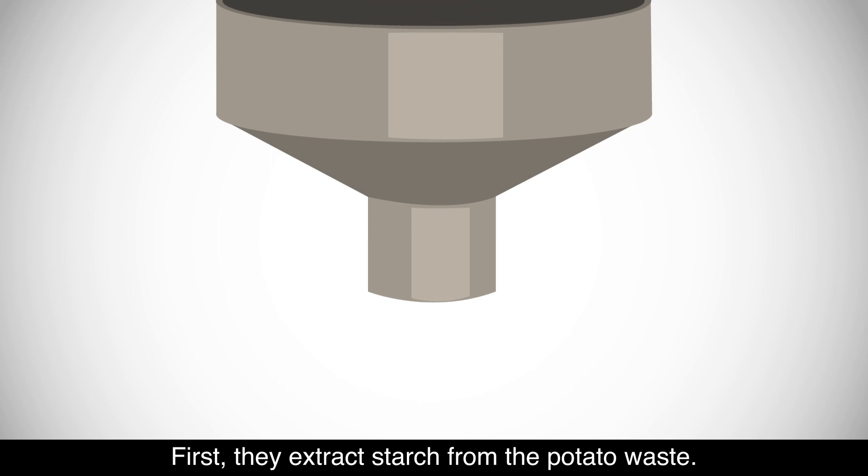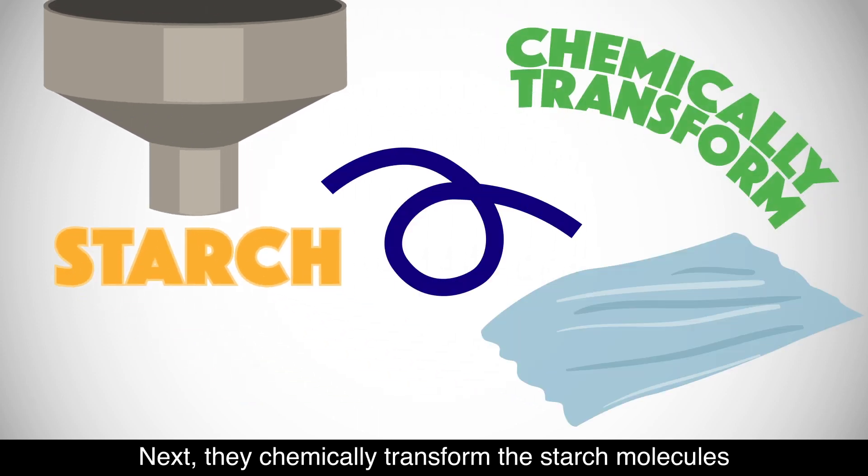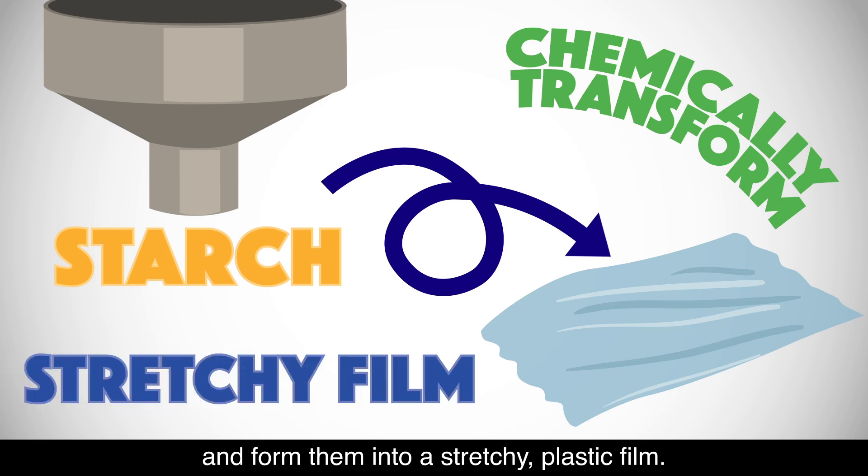First they extract starch from the potato waste. Next they chemically transform the starch molecules and form them into a stretchy, plastic film.